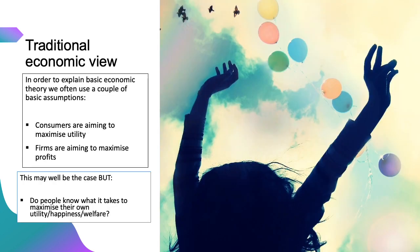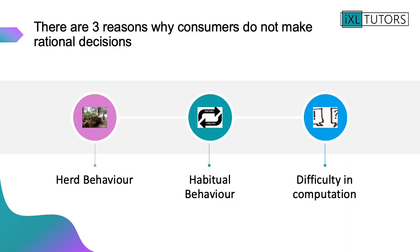Up to this point in economics we've assumed two things about consumers. Economically, there are three reasons why consumers don't make rational decisions — we're going to go through all of them individually. The first one is herd behavior, the second is habitual behavior, and the final one is difficulty of computation.